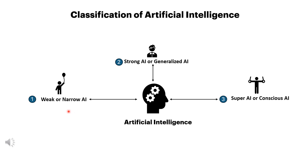Weak or narrow AI is AI that is applied to a specific domain. For example, language translators, virtual assistants, self-driving cars, AI-powered web searches, recommendation engines, and intelligent spam filters.